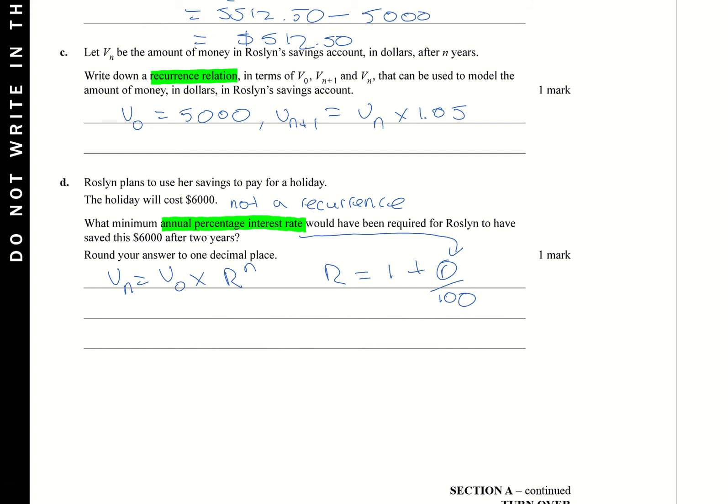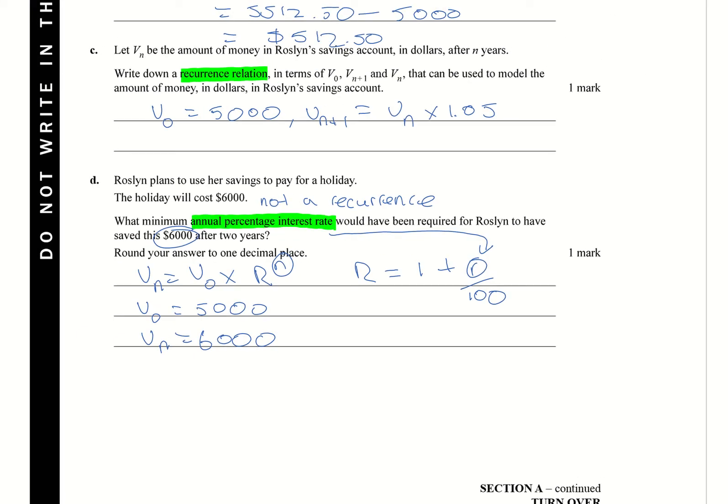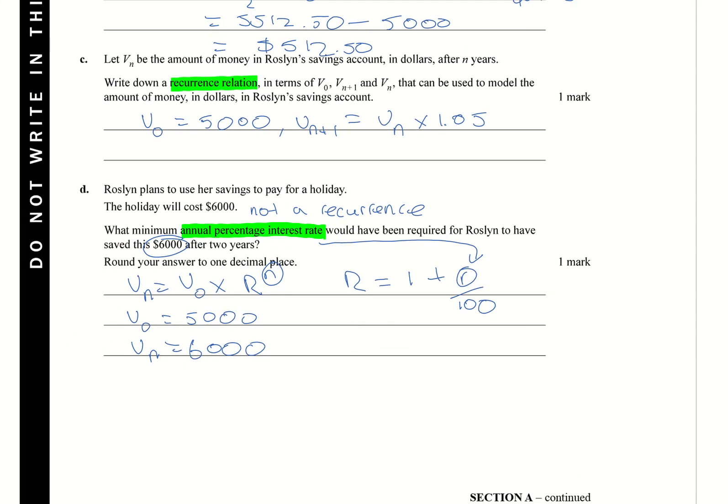All right. So what we want to do here is we've got our V0. We know what our V0 is. It's $5,000. We know what our VN is because that's the $6,000 because that's what our final thing is. All right. We know what our number of, so we've got our N. We know what N is because that's the number of times, the number of interest-bearing periods. And it's done yearly. So when there's two years. So N is going to be equal to two.